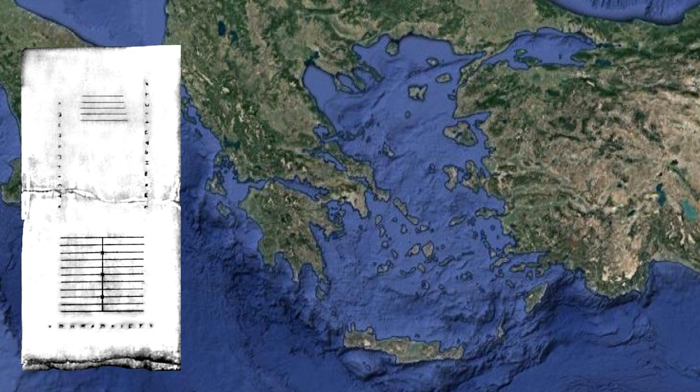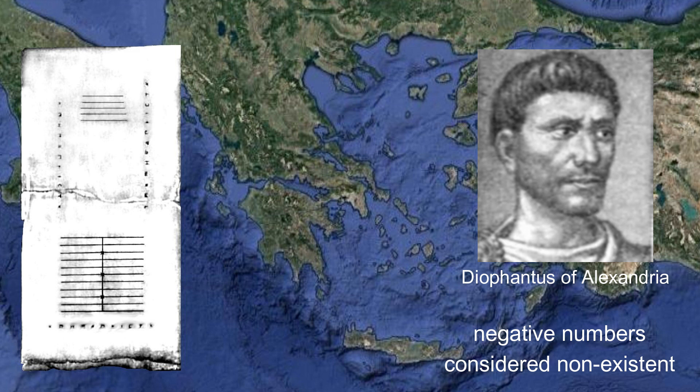To determine how this board actually was used in ancient times we have to consider that the concept of negative numbers didn't exist in antiquity. As late as in the third century AD, more than 500 years after the Salamis tablet was built, Greek mathematician Diophantus of Alexandria still regarded negative numbers as non-existent. A subtraction was only possible when the result was greater or equal zero.